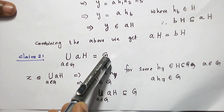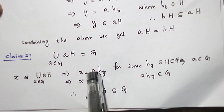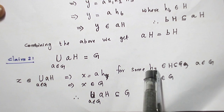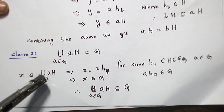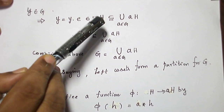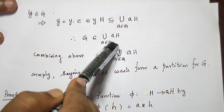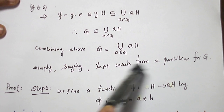Now, the union of all left cosets is G. I take an element in G; it is in some left coset AH, taking the form A·H₇. Both A and H₇ are elements in G, so their product is again in G. Thus the union of all left cosets is a subset of G. Conversely, for any element Y in G, Y = Y·E and E is in H, so Y belongs to YH, which is a left coset. Therefore G ⊆ union of all left cosets. Combining both, G equals the union of all left cosets — so the left cosets form a partition of G.